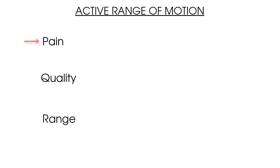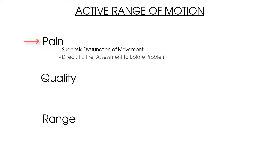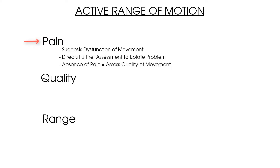In terms of pain, if pain is present we know that there is a dysfunction within this movement which may be causing our patient's problem, and will likely direct further testing to this area to try and isolate the source of the pain. If pain is not elicited as part of the examination, the therapist can move on to the next stage. For example, if there is no pain on active lumbar spine movements during a hip examination, the lumbar spine can be ruled out of the initial investigation.